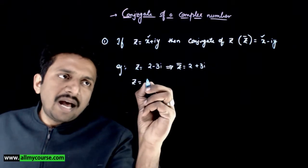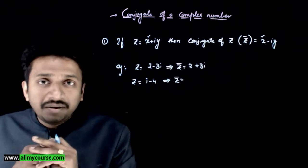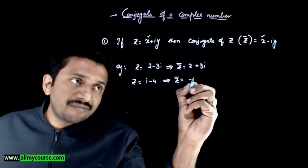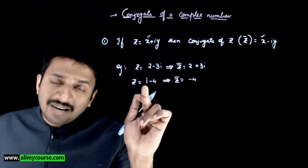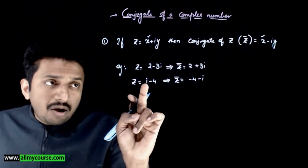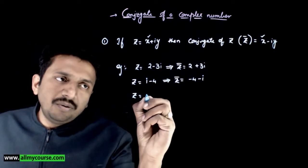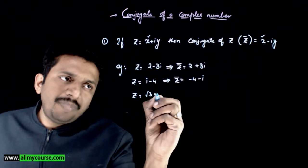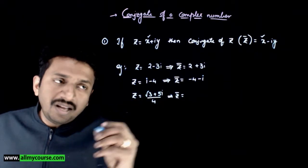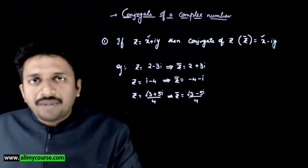If z is equal to i minus 4, then z bar is not equal to i plus 4 — this is where you need to be careful. z bar is minus 4 minus i: the real part remains same (minus 4), the imaginary part is plus 1 so it becomes minus 1. So the conjugate of i minus 4 is minus 4 minus i. Similarly, if z equals root 3 plus 5i by 4, the conjugate is root 3 minus 5i by 4 — just the sign of the imaginary part changes.